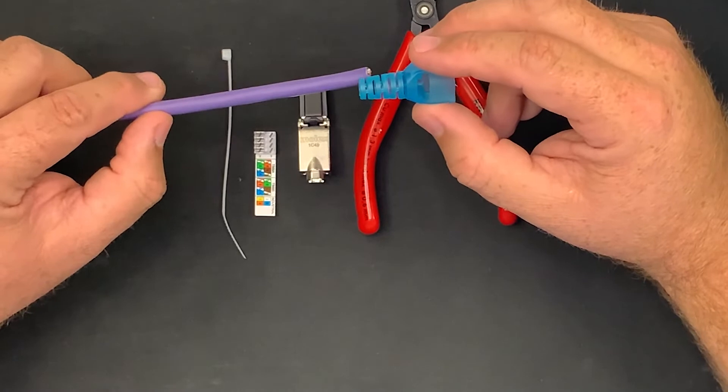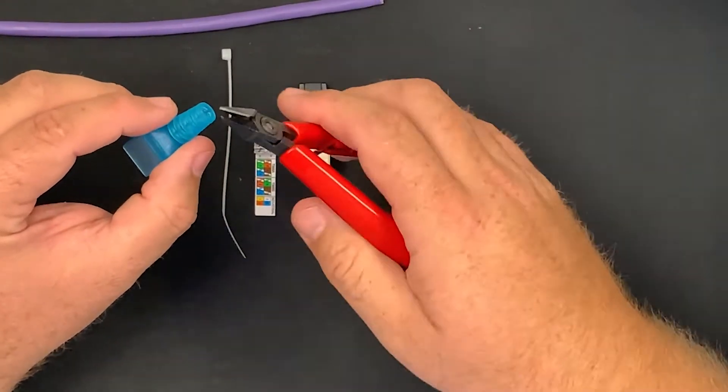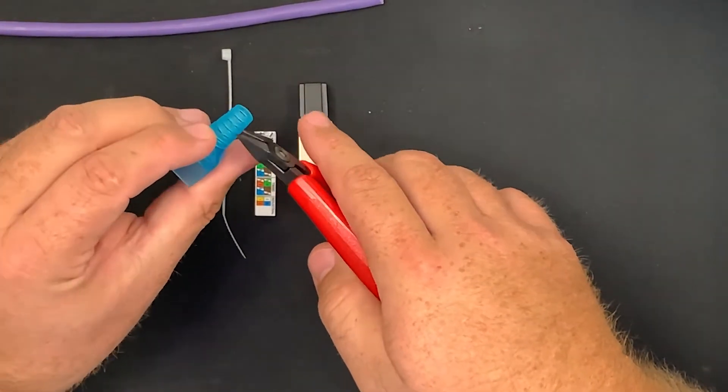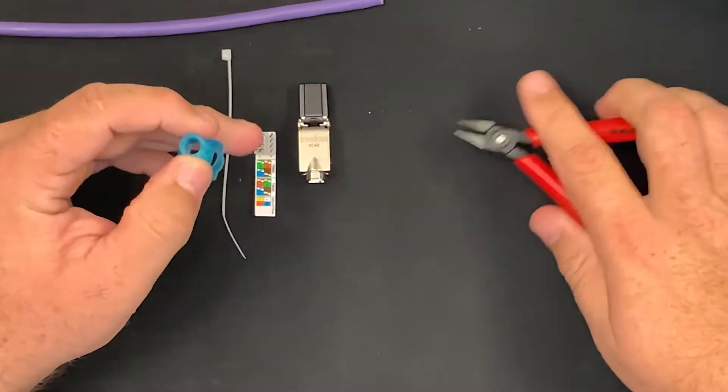Therefore, you must cut off the end of your boot to fit the outside diameter of your cable.